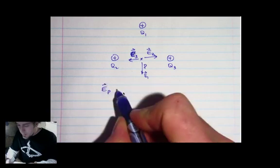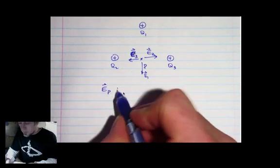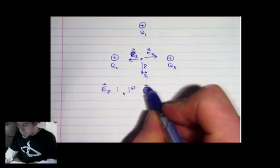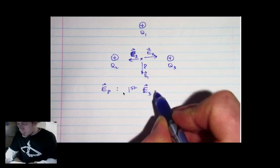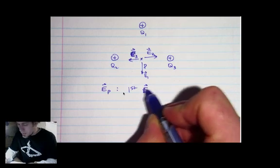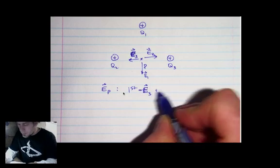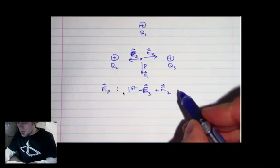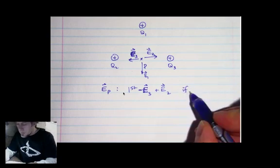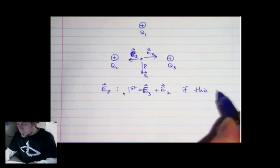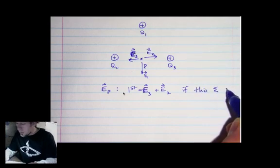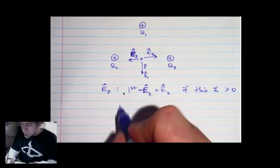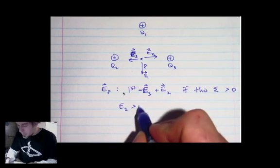The field at p will be, first of all, determined by summing e3 with e2. Now I'm going to say that e3 is negative pointing to the left, and then I'm going to add the field due to q2. If this sum ends up being greater than zero, then we know that e2 has to be greater than e3.